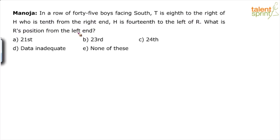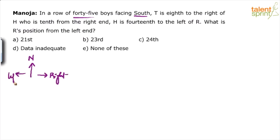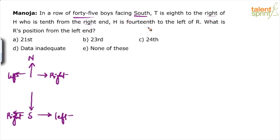There's some data about 45 boys standing in a row facing south. This facing south is very important because in linear arrangements, when a person faces north, right is taken towards our right on paper and left towards left. But when the person is facing south, left is on this side and right is on the other side. Since this is a ranking and ordering question, there will be a lot of data about left, right, and ends. When they face south, left should be taken towards right and right should be taken towards left.